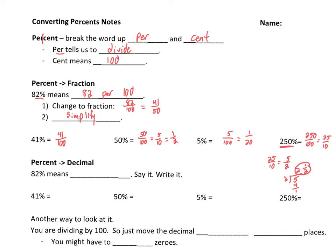Alright, so if it's more than 100%, we know it's going to be a number greater than 1. It's going to be a mixed number. Alright, now let's turn percents to decimals. Two different ways to do this. Okay, we know that 82% means 82 per 100. We already said that.